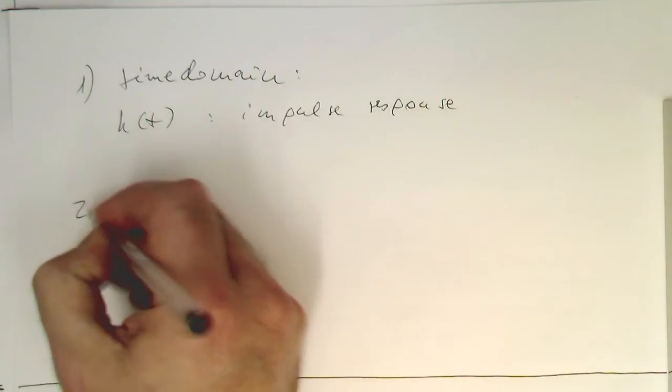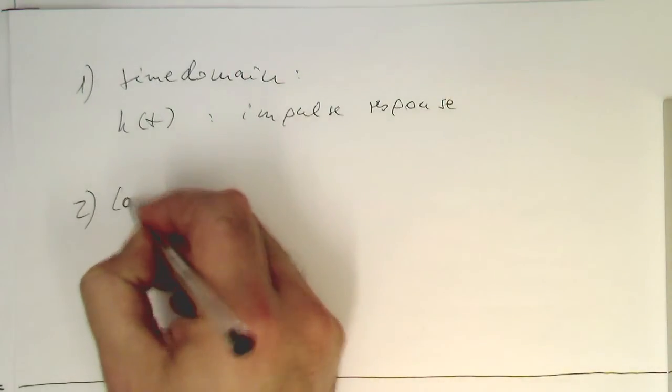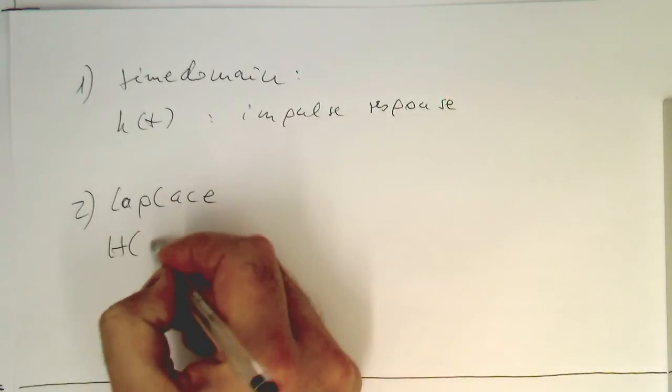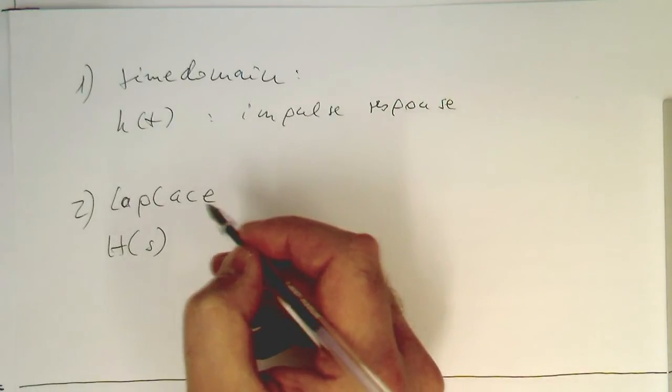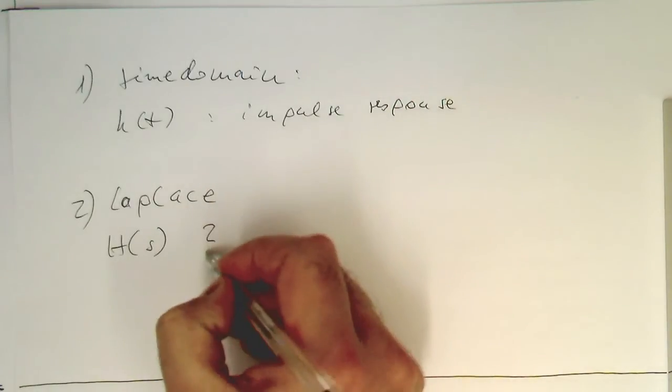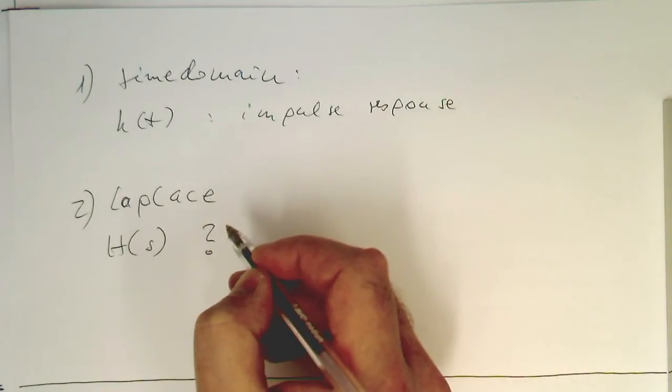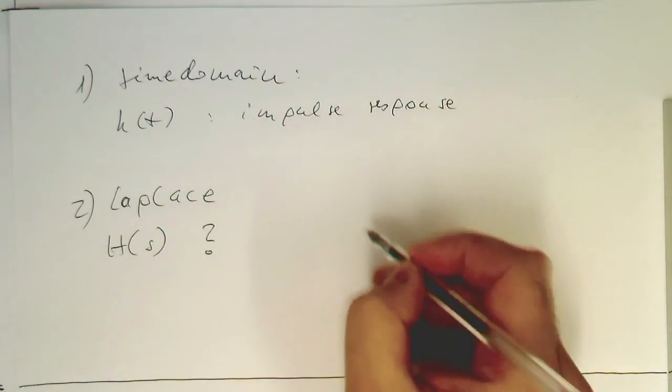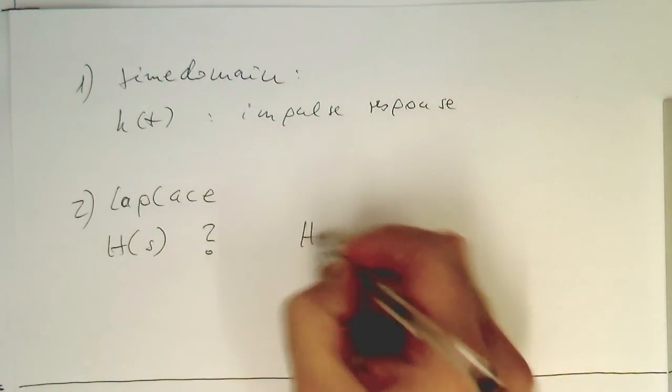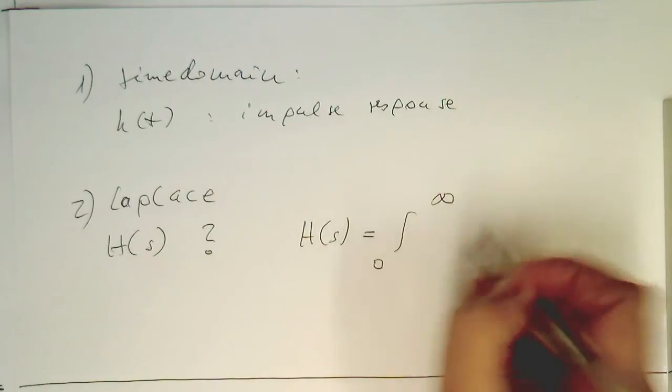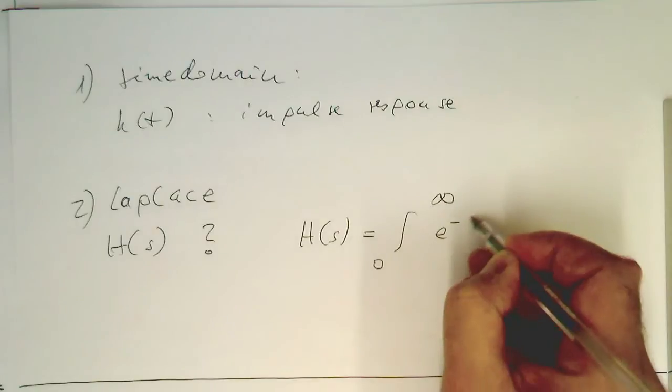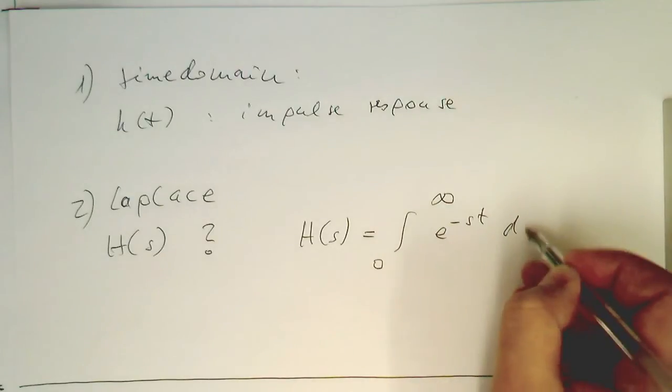Now, if we go into the Laplace domain, we've got our H of s here. What can we do with this H of s? Let's just write down the Laplace transform again here. That's H of s integral from 0 to infinity E to minus st dt.